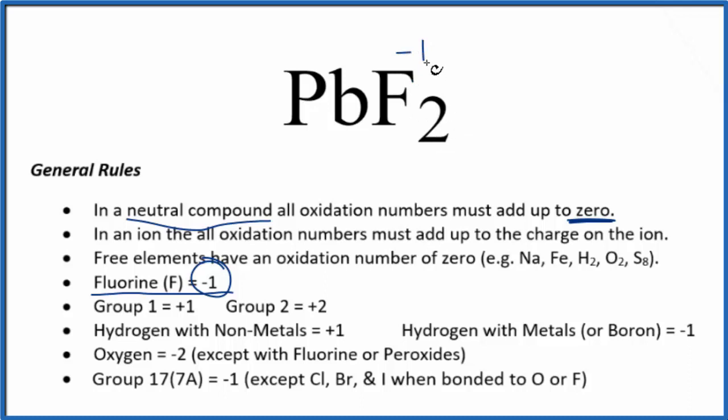If we multiply two times minus one, we'll get a minus two. So for all the oxidation numbers to add up to zero, we have to have a plus two on the lead here in PbF2.